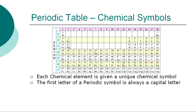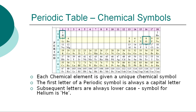The first letter of a Periodic Symbol is always a capital letter. For example, H for hydrogen and O for oxygen. If there are any subsequent letters, they are expressed in lowercase. For example, the chemical symbol for helium is He. The symbols have been created by using abbreviations of their English, Greek, or Latin names which are used and recognized all over the world.